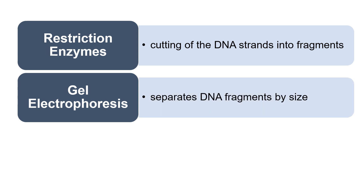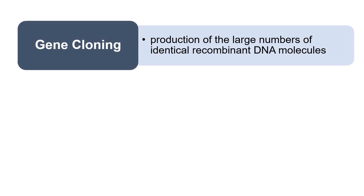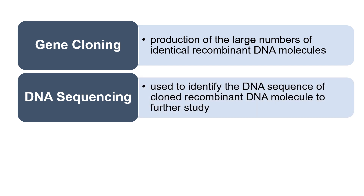Gel electrophoresis separates DNA fragments by size and is used to study DNA fragments of various sizes. In recombinant DNA technology, it is the combination of a DNA fragment with a DNA from another source, also called exogenous DNA. Gene cloning is the production of large numbers of identical recombinant DNA molecules, used to create large amounts of recombinant DNA to be used in genetically engineered organisms. DNA sequencing is used to identify the DNA sequence of a cloned recombinant DNA molecule for further study, to identify errors in the DNA sequences, to predict the function of a gene, and to compare to other genes with similar sequences from different organisms.